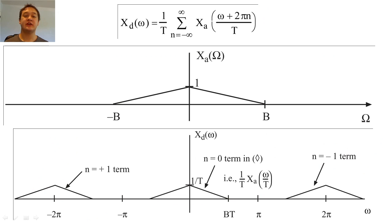Graphically, this equation tells us that we produce replicates of X sub a of omega at every 2 pi interval. We scale the Fourier transform by 1 over t.